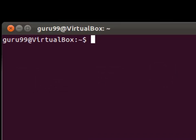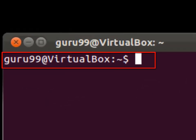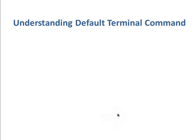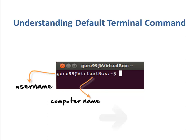Once you have launched the CLI, you would find some information already populated on the screen. The first part of this line is the name of the user, which can be Bob, Tom, Ubuntu, Home or Guru99. The second part is the computer name or the host name. The host name helps identify a computer over the network. In a server environment, host name becomes important.